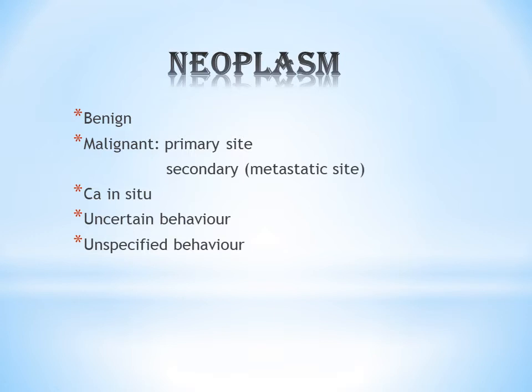Next is carcinoma in situ (CA in situ). If the code to be picked is CA in situ, it will be clearly mentioned in the documentation as CA in situ. It is commonly known as stage zero of cancer — it is not actually cancer, but it can become cancerous tissue in the future. Next, uncertain behavior means the neoplastic behavior cannot be determined properly. Unspecified behavior means it is not mentioned whether benign, malignant, or CA in situ, so we take unspecified behavior.